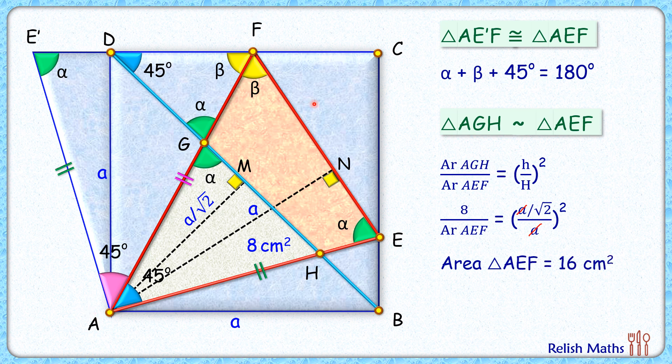And the area of this quadrilateral EFGH will be 16 minus 8, or 8 centimeters squared, and that's our answer. I hope you enjoyed the solution. I will see you in the next video. Till then, tata, bye bye.